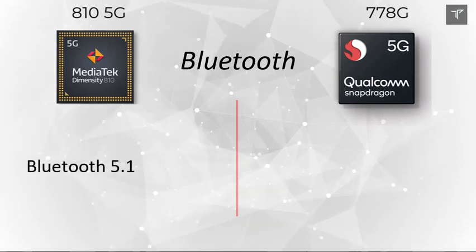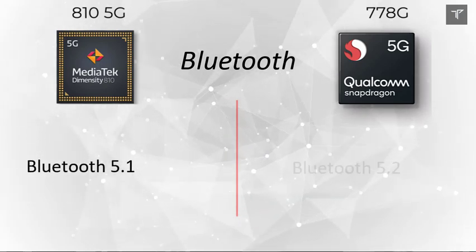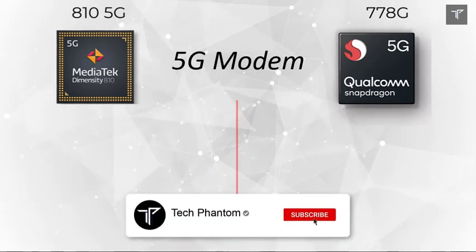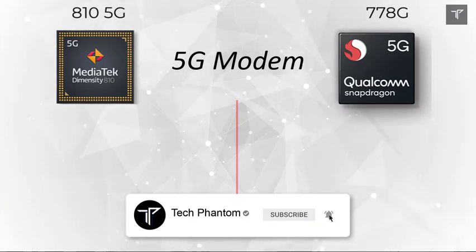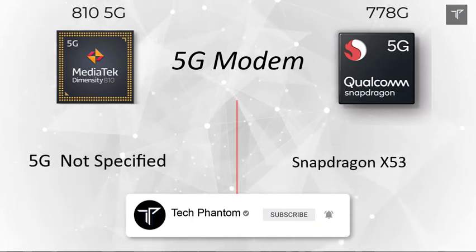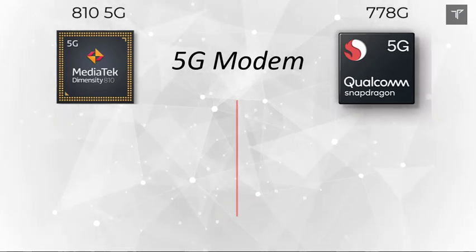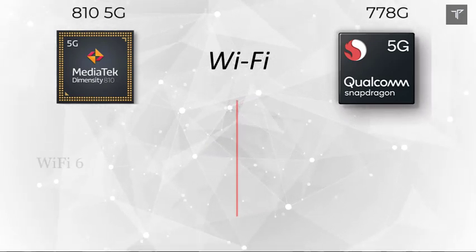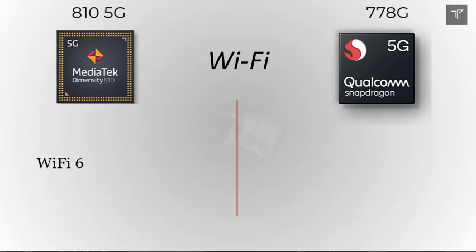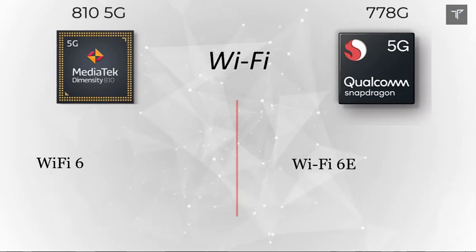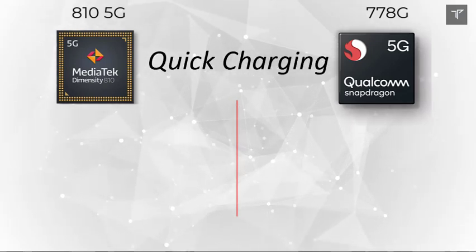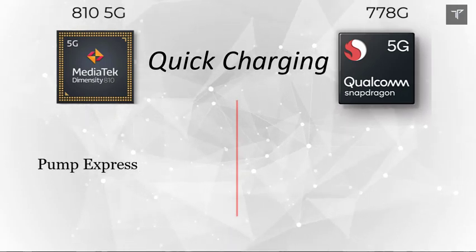On the connectivity side, the MediaTek Dimensity 810 offers Bluetooth 5.1 out of the box, while the Qualcomm Snapdragon offers Bluetooth 5.2. For 5G, both are 5G-capable processors. On the Wi-Fi side, Qualcomm has the upper edge with Wi-Fi 6E compared to Wi-Fi 6 on the MediaTek Dimensity 810.